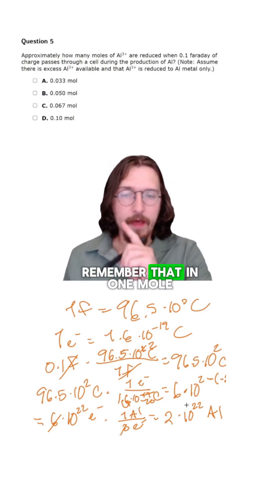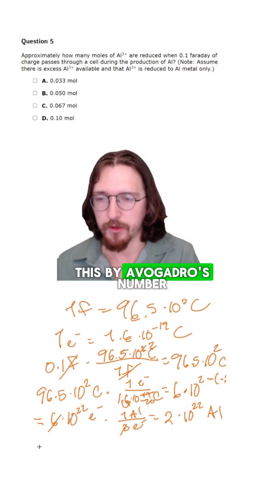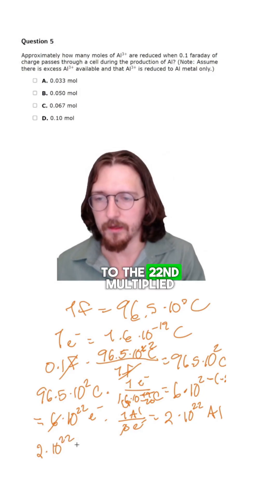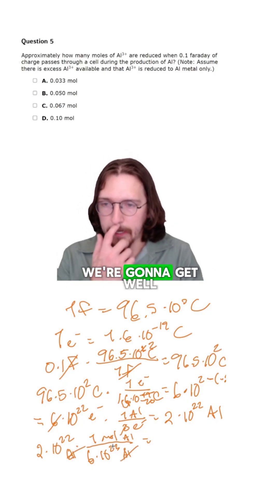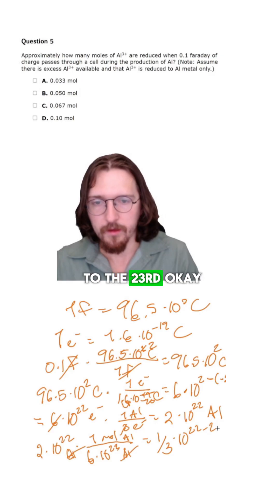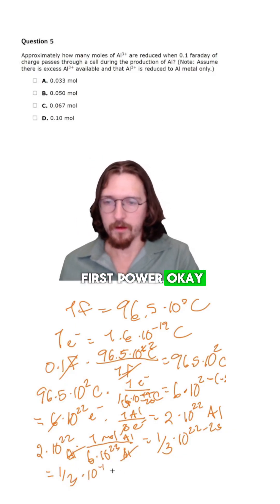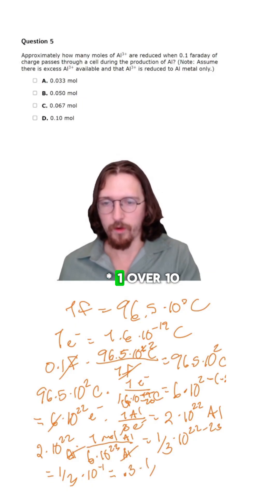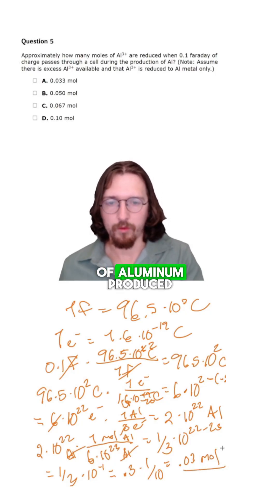So how do we get this to moles? We need to remember that in one mole there is 6 times 10 to the 23rd particles, which is Avogadro's number. So we divide: 2 times 10 to the 22nd multiplied by 1 mole over 6 times 10 to the 23rd particles. The particles cancel, and 2 divided by 6 is 1 third, times 10 to the 22nd minus 23rd, which is 1 third times 10 to the negative 1st, which equals 0.03 moles of aluminum produced.